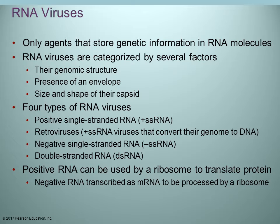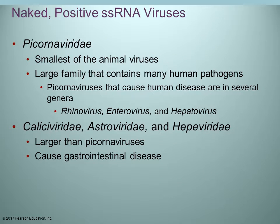Positive RNA means the ribosome can directly use it to translate and produce proteins. Negative RNA strand has to be transcribed first to make messenger RNA, and then translation occurs. The positive RNA strand goes straight to translation. We're going to go through the different groups, talk about them, and discuss some of the various diseases they can cause.